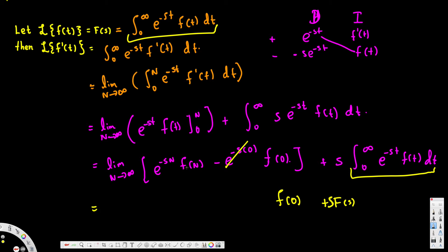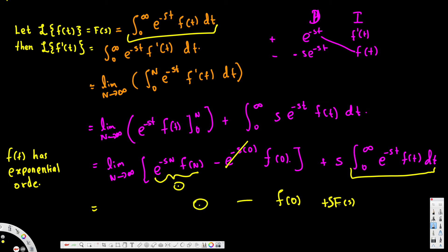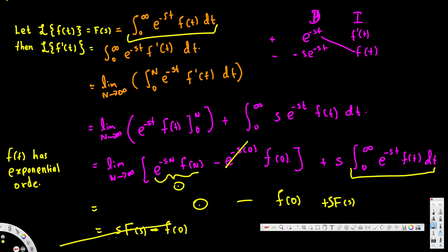Since f of t has exponential order, the whole term e to the power negative sn times f of n is also 0. So the expression becomes 0 minus f of 0 plus s times F of s. Rearranging this in a better way, the Laplace transform of f prime of t equals s times F of s minus f of 0.